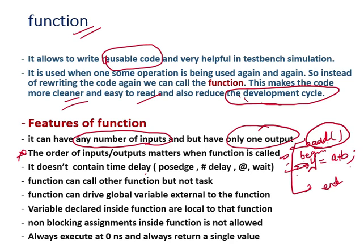A function does not contain any time delay. Tasks contain time delays — like hash (#), triggering signals like positive edge of clock, negative edge of clock, and wait — but not functions. Because a function has no time delay, if a function call is converted into hardware it is a pure combinational circuit. A function call can represent a pure combinational circuit. Also, from inside a function you can call another function, but not a task.